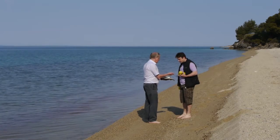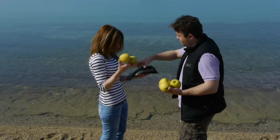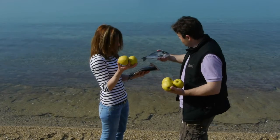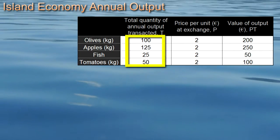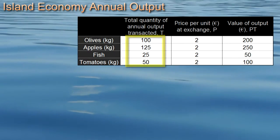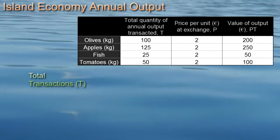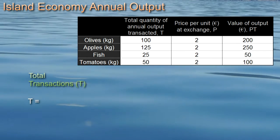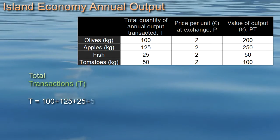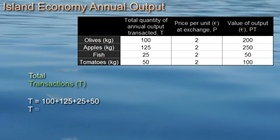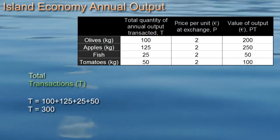Each of our four community members produces some output and sells it to the others. The first column gives the physical outputs of the goods that are then sold in the market. We can call the total T for transactions. The total transactions T for our economy are 100 kilos of olives, plus 125 kilos of apples, plus 25 fish, plus 50 kilos of tomatoes, which equals 300.